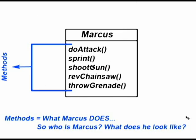We've already gone over methods — methods are what the class does, what it can do. So here we have a Marcus class. He can do an attack, he can sprint, shoot a gun, rev a chainsaw, throw a grenade. Those are all methods — things he can do. But what is he? What does he look like? Can't another character we might create called Lucian do all these same things? Well, he can, because they're methods — they're things that they do.